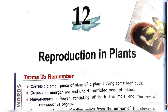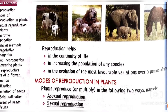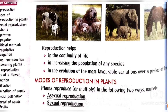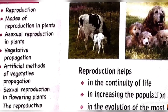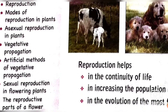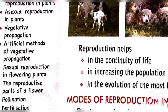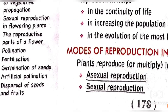Let's see about the contents of this chapter. In this chapter we will learn about the reproduction of plants: what is reproduction, different modes of reproduction, sexual and asexual reproduction, different types of asexual reproduction, vegetative propagation, and artificial and natural methods of vegetative propagation. Also we will learn about the reproductive parts of flower, pollination, fertilization, germination in seeds, and several artificial pollination and seed dispersal methods.